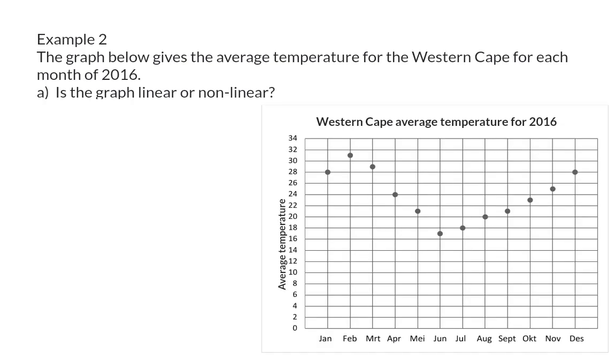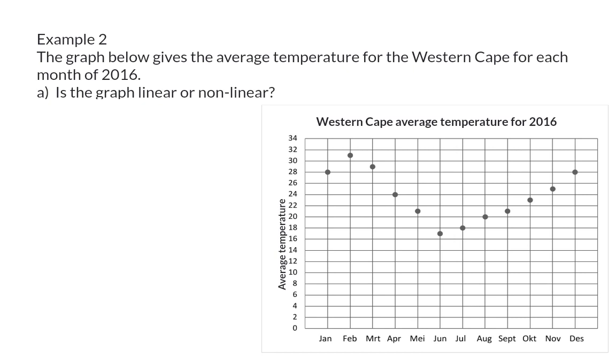Example 2. The graph below gives the average temperature for the Western Cape for each month of 2016. First question: Is the graph linear or non-linear? Here, we can clearly see that it's not possible to draw one straight line between all the points. Therefore, this graph is non-linear.